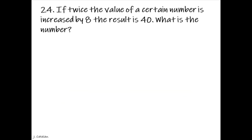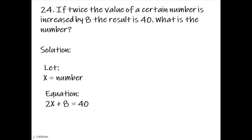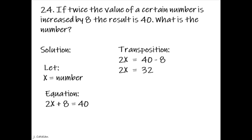If twice the value of a certain number is increased by 8, the result is 40. What is the number? Solution. Let x equal the number. Equation: 2x plus 8 equals 40. When a positive number is transposed, it becomes negative. The equation becomes 2x equals 40 minus 8, so 2x equals 32. Transpose the multiplier to become the divisor: x equals 32 divided by 2, so x equals 16.